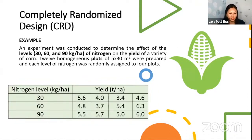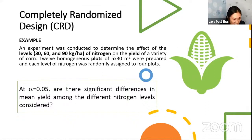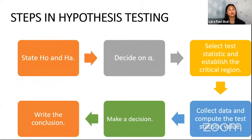So this is now your data — it's balanced. We have this question: at alpha 0.05, are there significant differences in the mean yield among the different nitrogen levels considered? So we're comparing the means. We have to recall the steps in order to answer that question.